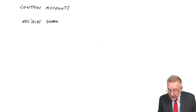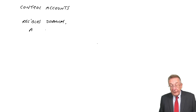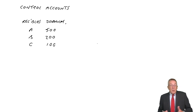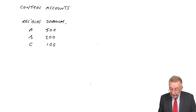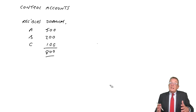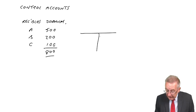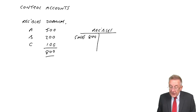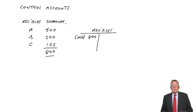If we make sales on credit, the first thing we do is list every sale in our book of prime entry — the sales day book, or the receivables day book, or the receivables journal. Suppose we made sales to Mr. A of 500, Mr. B of 200, Mr. C of 100. At the end of the month, we take the total of 800 and do the double entry: debit receivables with 800, credit sales.